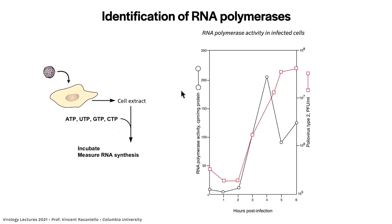How were RNA polymerases identified? RNA-dependent RNA polymerase is the term I'll use for viral enzymes that copy viral RNA. What people did was infect cells with a virus, then at different times after infection they cracked the cells open, made a cell extract, and added the four triphosphates needed to make RNA — ATP, UTP, GTP, and CTP — one of which was radioactive. They then incubated this and measured RNA synthesis. An early result is shown on a graph.